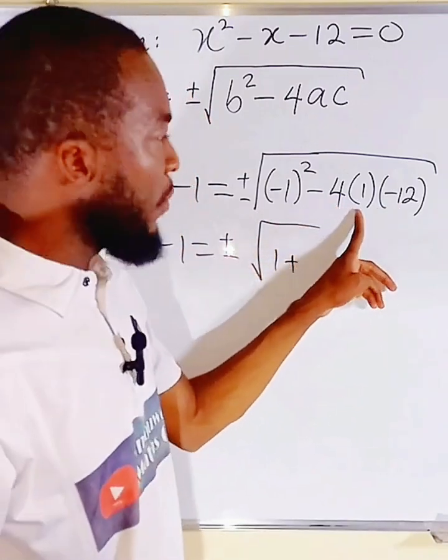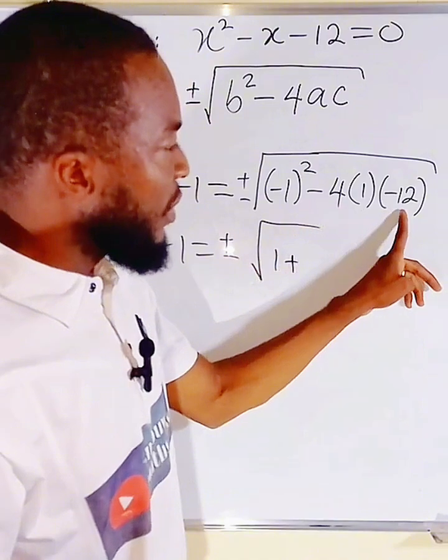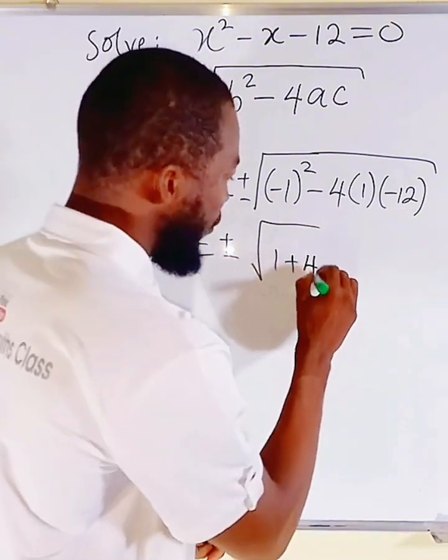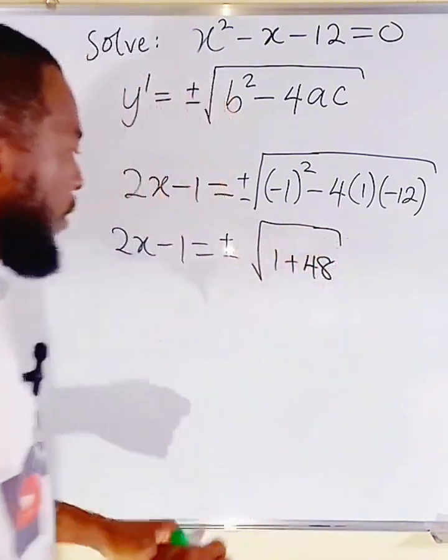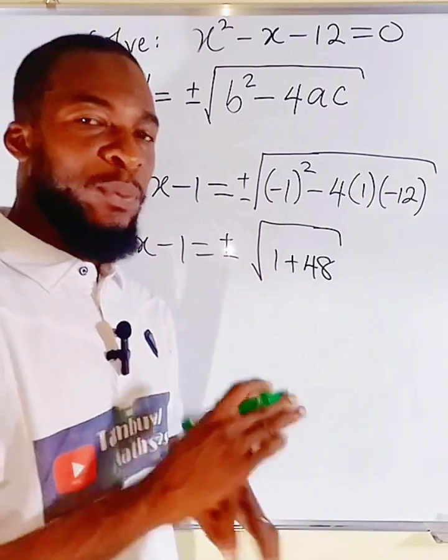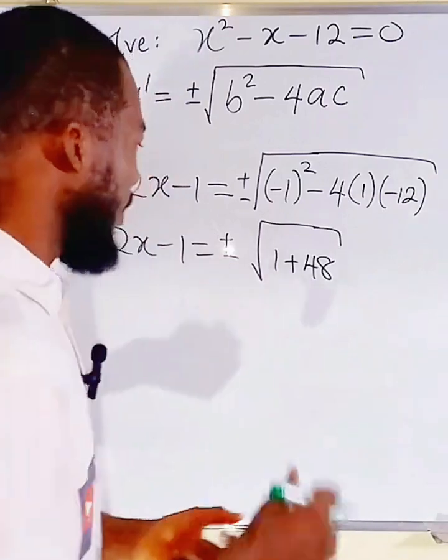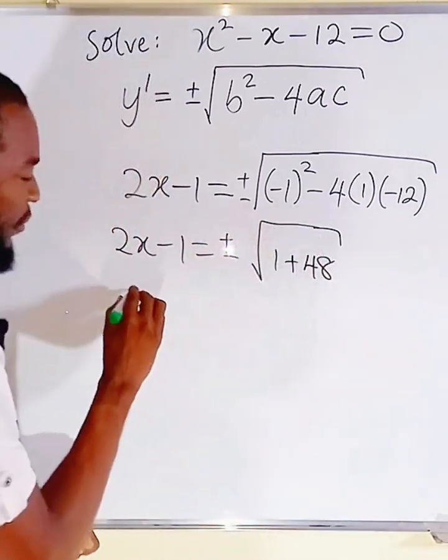4 times 1 is 4. And 4 times 12 is 48. So, we have 48 here. 1 plus 48 is 49. And the square root of 49 is 7. So, everything here is 7.